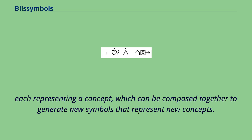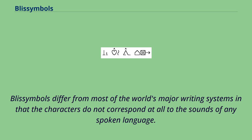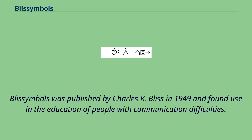Bliss Symbols represent a concept which can be composed together to generate new symbols that represent new concepts. Bliss symbols differ from most of the world's major writing systems in that the characters do not correspond at all to the sounds of any spoken language. Bliss symbols was published by Charles K. Bliss in 1949 and found use in the education of people with communication difficulties.